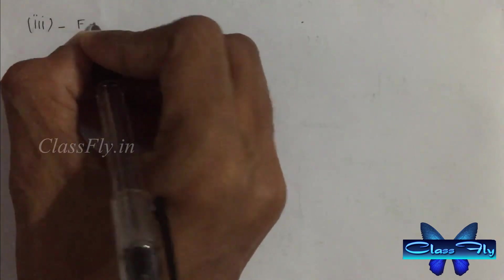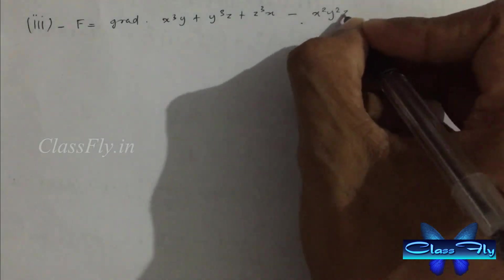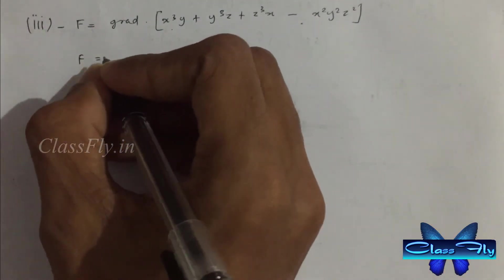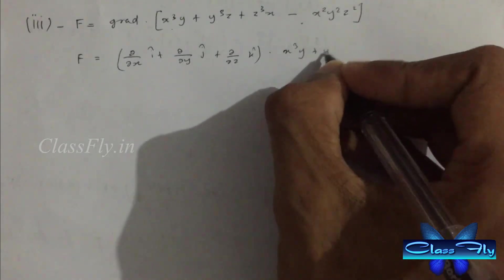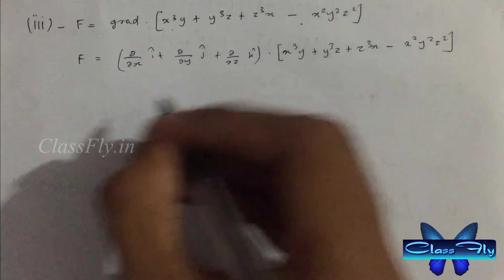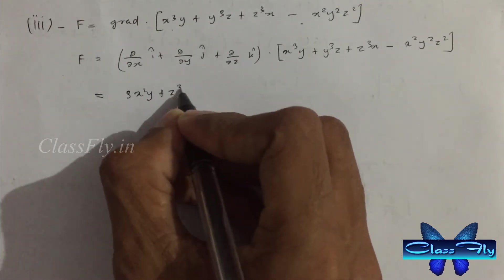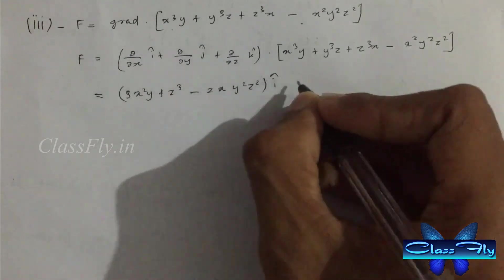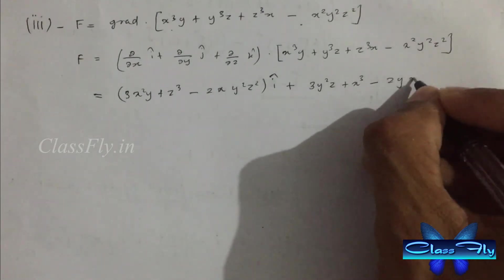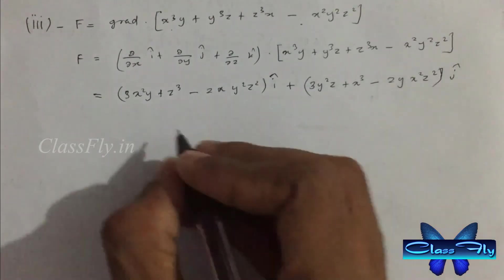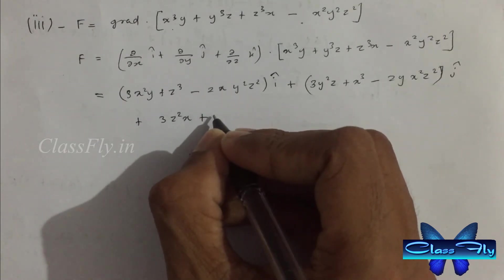The third one is F equals gradient of x cube y plus y cube z plus z cube x minus x square y square z square. This gives 3x square y plus z cube minus 2xy square z square i cap plus 3y square z plus x cube minus 2xz square y square j cap plus 3z square plus y cube minus 2x square y square k cap.